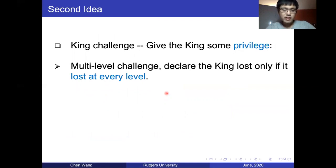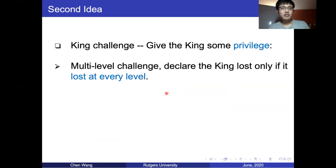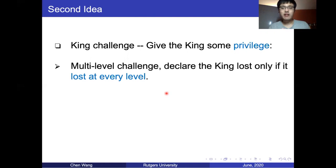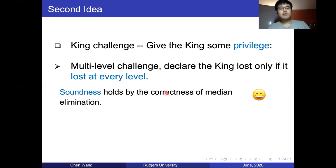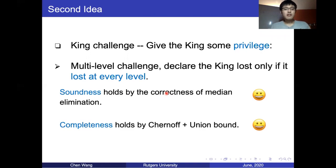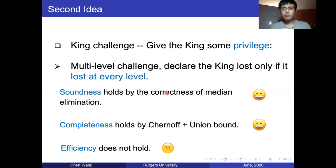The lesson is that we have to give the king some privilege — we cannot discard it immediately after it is outperformed. Our second idea is to bring a multi-level challenge to the algorithm. If a king is outperformed by a challenger, we don't discard it; instead we give it a second chance, increase the number of coin tosses, and do the comparison again. A king is only declared defeated if it loses with around O(log N) coin tosses, because at this level the real coin* should win with high probability. Soundness holds by similar arguments to median elimination. However, efficiency is problematic: if coin* doesn't come first, other coins can compete with each other using O(log N) coin tosses per pair, which ruins the efficiency.